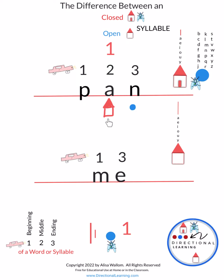This house right here doesn't like blue flies next to it, because the blue fly can go in the house. So the house makes a door and it's going to close off the door so that that fly cannot go inside the house — because there's a closed door there now. This is a closed syllable. Whenever there's a blue fly next to it, you close the door. That's a closed syllable.